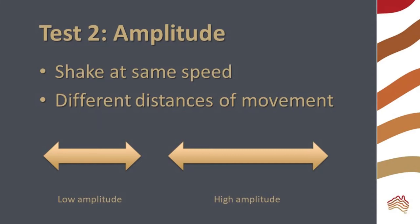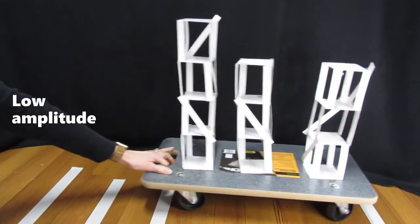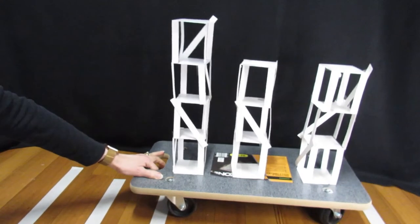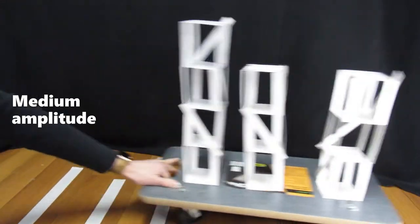In test two, we change the amplitude of the movement by moving the trolley different distances along the floor. What is the effect of a greater amplitude?